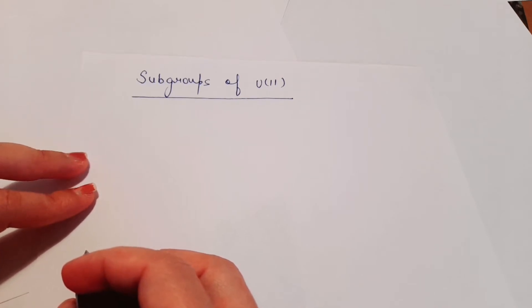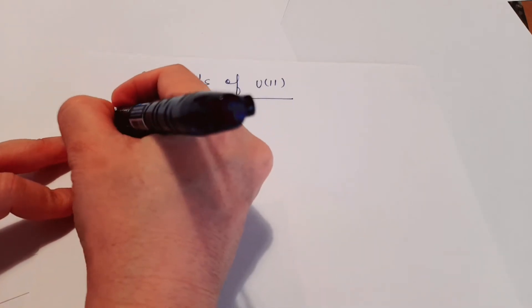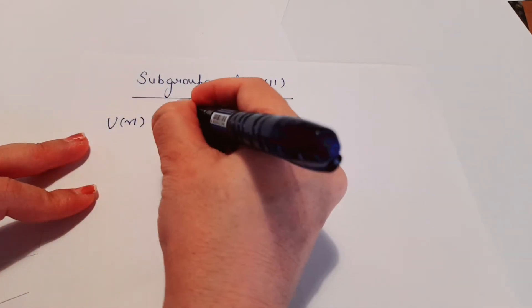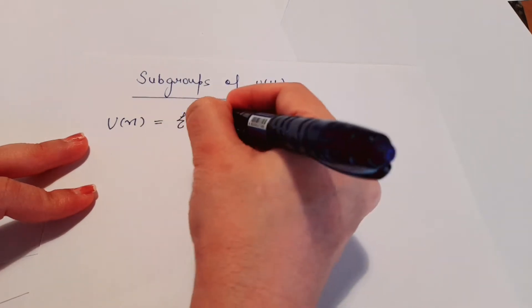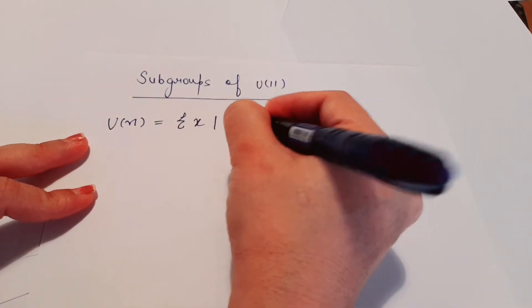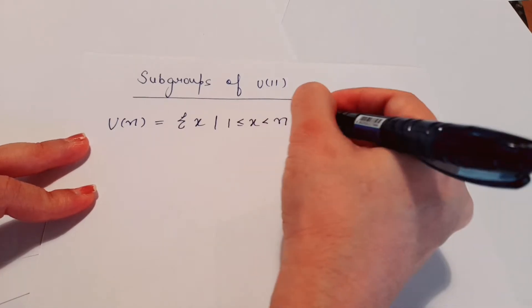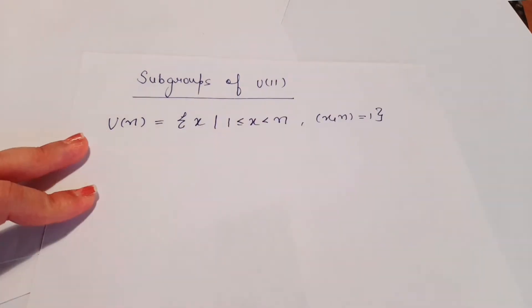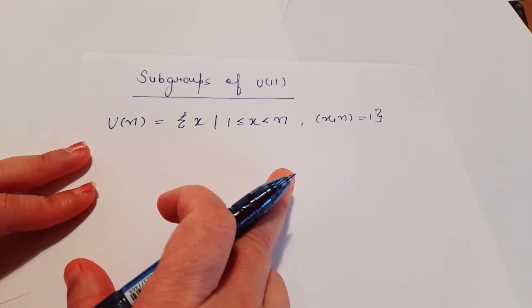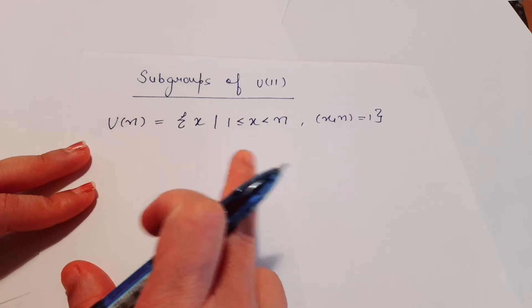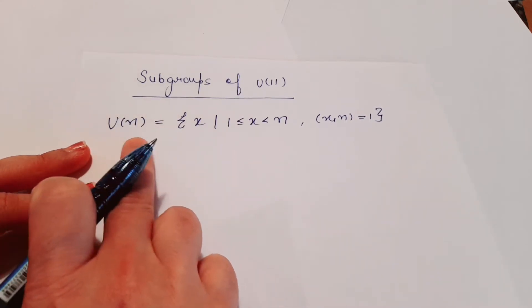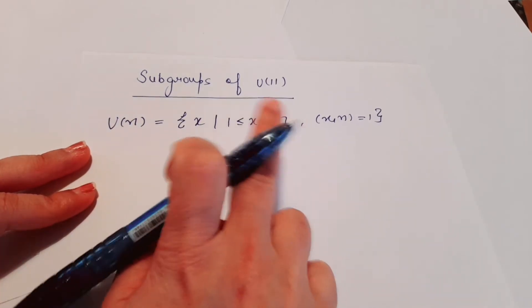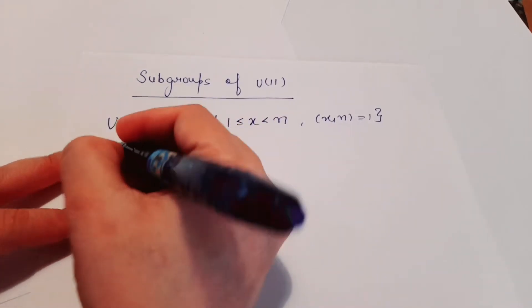First of all, we will see what is U(n). You know what is a U(n) group — it is the set of x such that x is greater than or equal to 1 and less than n, and x and n are co-prime to each other. Those elements which are less than n and co-prime to n form the U(n) group.